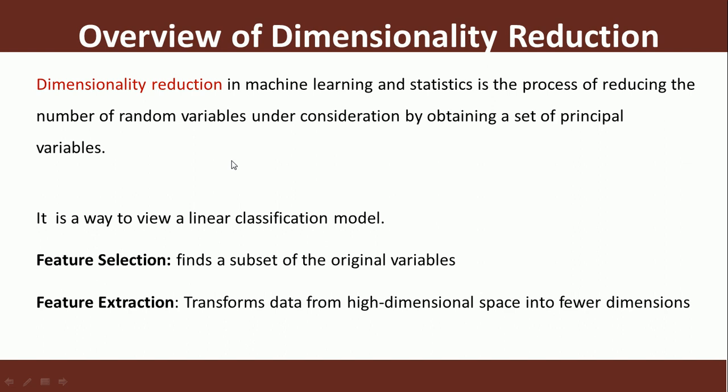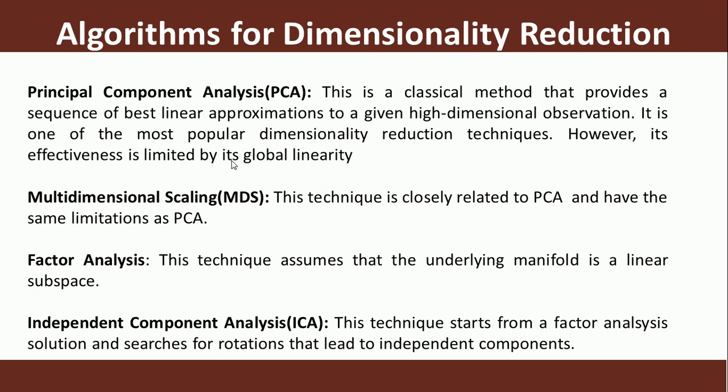Feature selection finds a subset of the original variables. Feature extraction transforms the data from a higher dimension to a fewer dimension. For example, if you have data with 1000 rows and 20 columns — features like color, owner, and weight — dimensionality reduction reduces this higher-dimensional data into fewer dimensions by extracting the most important features. Dimensionality reduction is called a variance maximizing method — we try to find features that add the most significant variance to the data.